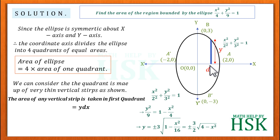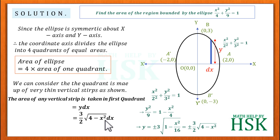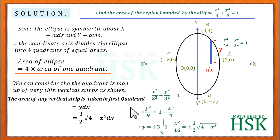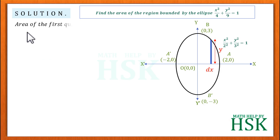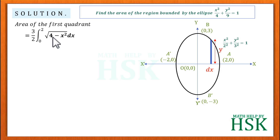Since we are in the first quadrant, y is positive. So the area of one strip = (3/2)√(4 − x²) dx. The area of the first quadrant is obtained by integrating from x = 0 to x = 2: Area of first quadrant = (3/2) ∫₀² √(4 − x²) dx.